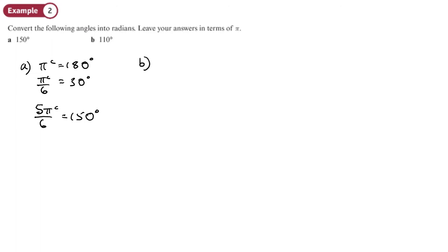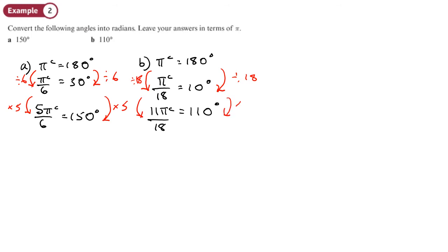In part B, start with pi radians is 180. I'm thinking about a common factor. Now if I divide by 18 to get 10. So that's going to be 10 degrees. And then if I times that by 11, I'll get 110 degrees. So that's then 11 pi radians over 18. I'm just doing this by saying divide by 6 here, just so that I can get to a number which I can then convert into the number that I want. And then, same here, I divide it by 18.